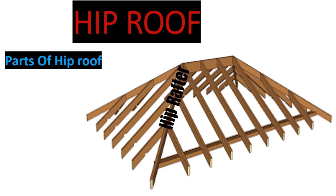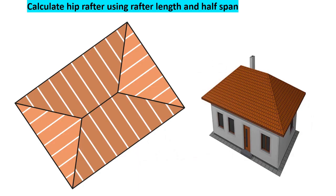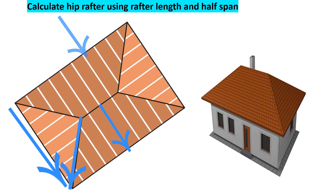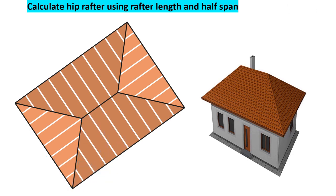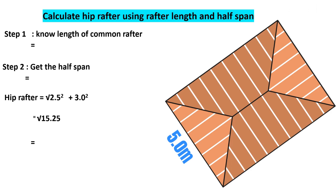We are going to look at the first method to get the hip rafter. This is our plan — the top view of our roof. This is the hip rafter, this is the common rafter, this is the span, and this is the length of the house. For this plan we are taking a span of 5 meters and a common rafter of 3 meters. The half span is half of 5, which is 2.5 meters.